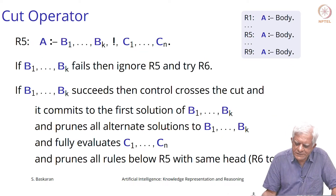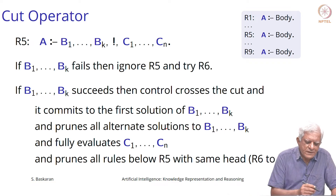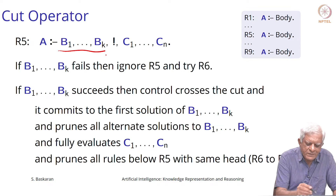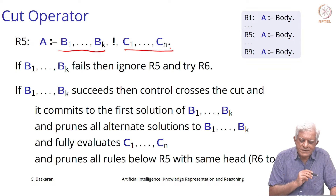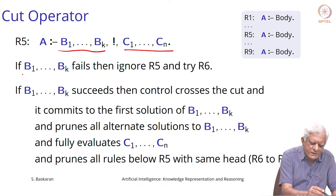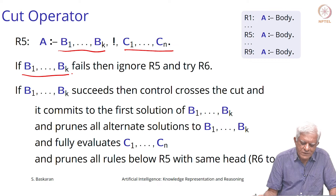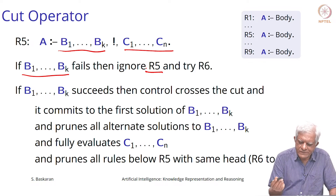This is how we can understand cut. If there is some rule, let us call it rule r5, which says that a is true if b1 up to bk is true and c1 up to cn is true, but there is a cut in between after the b's. If the b1 to bk part fails, then we will simply ignore this rule r5 and go and try the next rule, which is r6 or something.